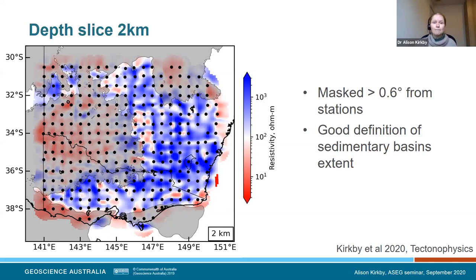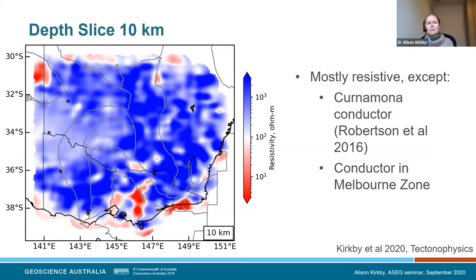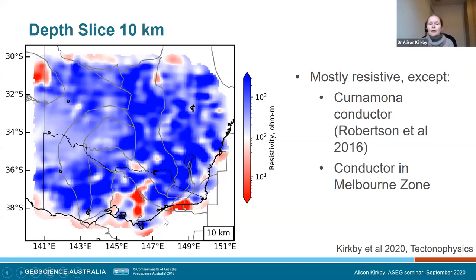At 10 kilometres it's mostly resistive and not all that geologically interesting, but it's quite reassuring from a model perspective because it suggests that a lot of the static shift effects in the MT data have been incorporated in the upper 10 kilometres. There are a couple of obvious exceptions — the Curnamona conductor up in the Curnamona Province, which Kate found as part of her PhD and is being investigated further — and one in the Melbourne Zone, which could be worth looking into in more detail to better understand its robustness.